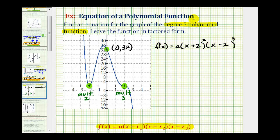So these must be the factors of our polynomial function. And now we'll use this point here to determine the value of a. If this function contains the point zero, thirty-two, then f of zero must equal thirty-two. And we can use this to find the value of a.